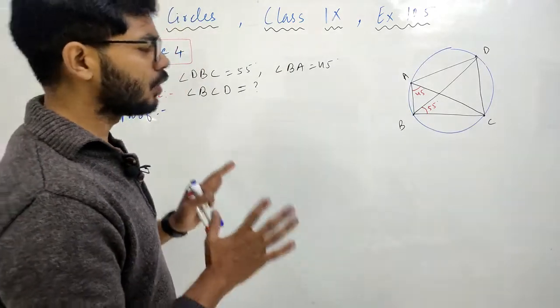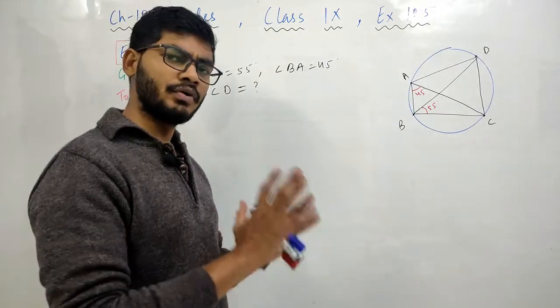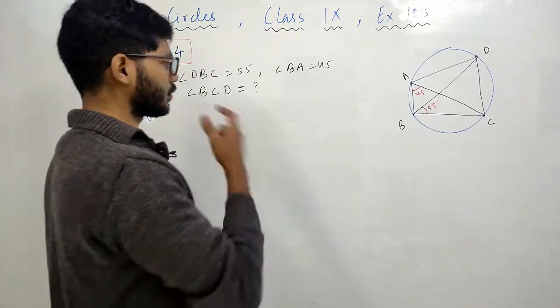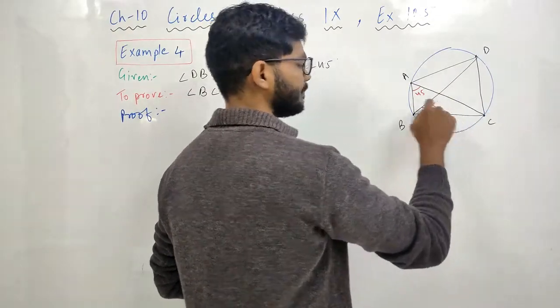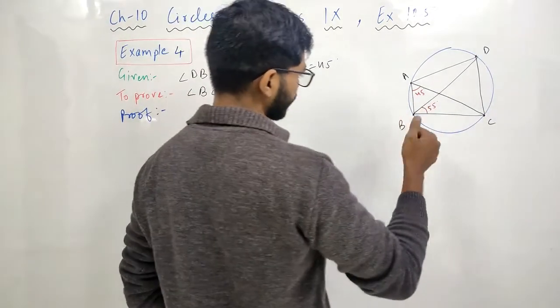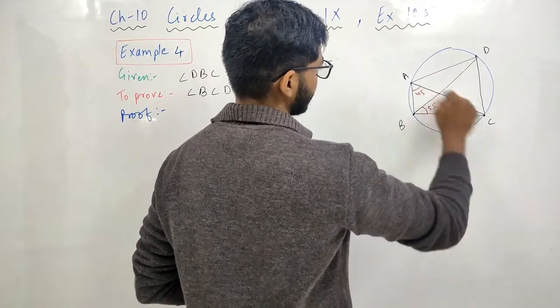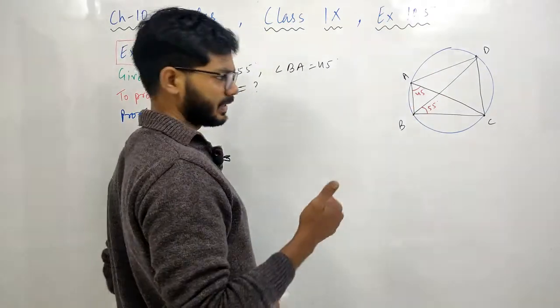देखिए मैंने आपके लिए figure और जो angles दिये हुए है वो मैंने लिखे हुए है. कौन-कौन से angles दिये हुए - एक तो आपको दिया हुए DBC 55 degree और फिर आपको दिया हुए angle BAC 45 degree. Is that clear?